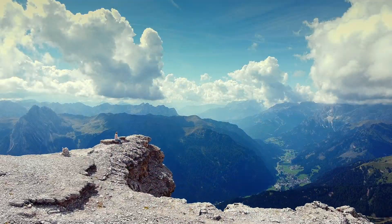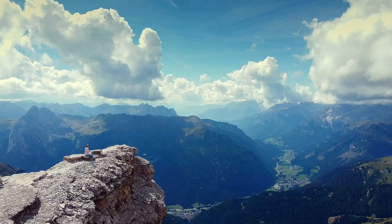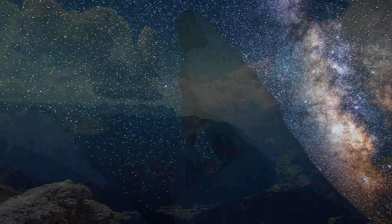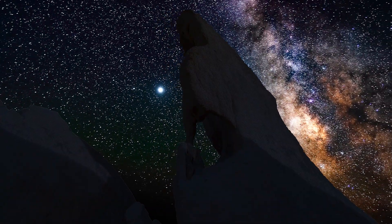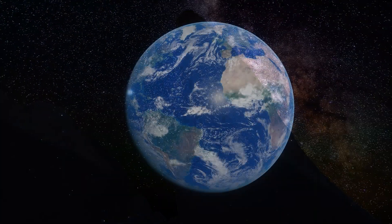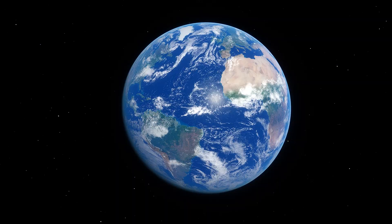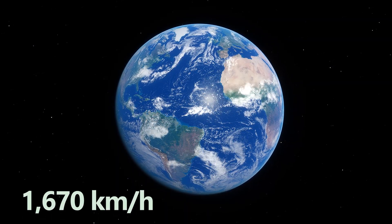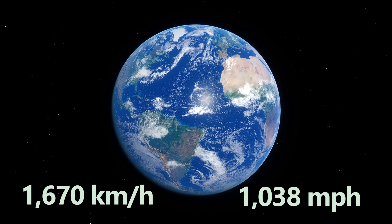Number two. It may feel like we are sitting still on Earth, but nothing in space is truly at rest. Every object is in constant motion relative to something else. At the equator, Earth rotates at a speed of about 1,670 kilometers per hour or roughly 1,038 miles per hour.